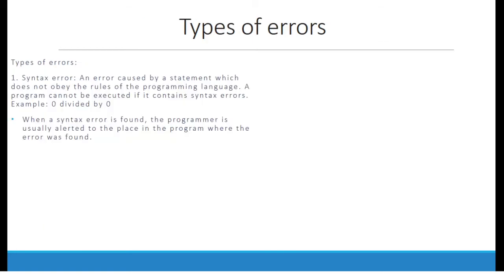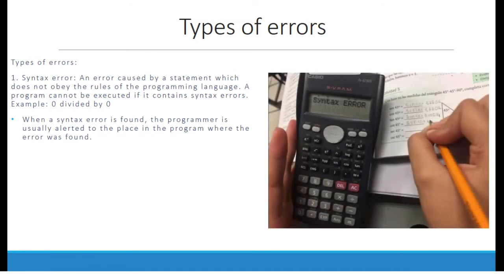Types of errors. 1. Syntax error — an error caused by a statement which does not obey the rules of the programming language. A program cannot be executed if it contains syntax errors. For example, 0 divided by 0. When a syntax error is found, the programmer is usually alerted to the place in the program where the error was found. On the right, we can see a syntax error in this person's calculator.